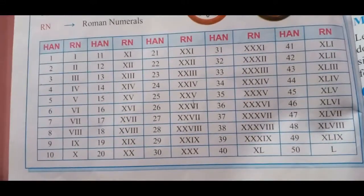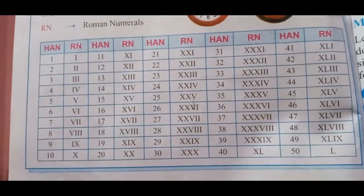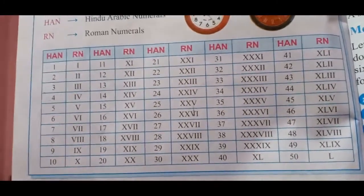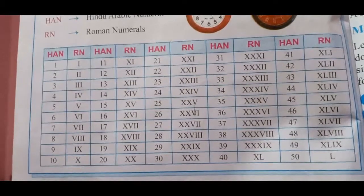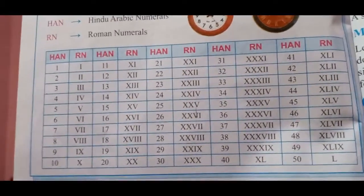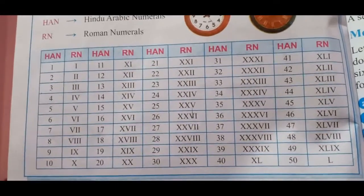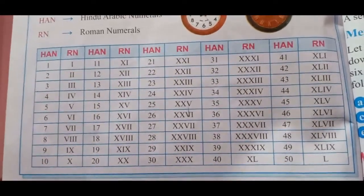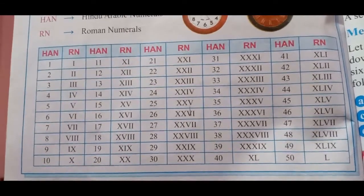Now it is time to go to the topic of Roman numbers. You can see here Roman numbers from 1 to 50. Please copy it in your copy because it is not possible to write on the whiteboard. I am showing you the Roman numbers — all written in your book from 1 to 50.